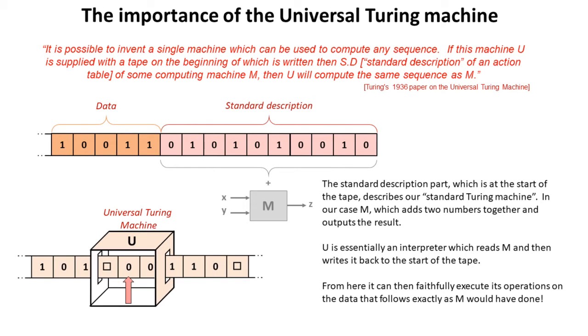Once it's done that, it can then faithfully execute its operations on the data that follows, exactly as M would have done. And by doing so, we now have a universal Turing machine.